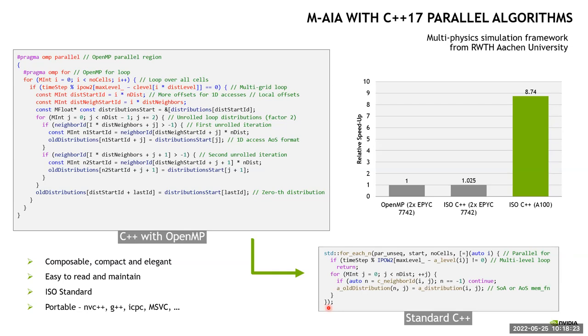And this isn't limited to just mini apps. So here's some information from an application called Maya, which comes from RWTH Aachen University. It's about a half a million lines of code written over the course of many years. And so with a code that large, it's a multi-physics application with a code that large, you can't expect it to just be rewritten overnight. But what they've started to do is go through individual solvers and refactor them using ISO parallelism.